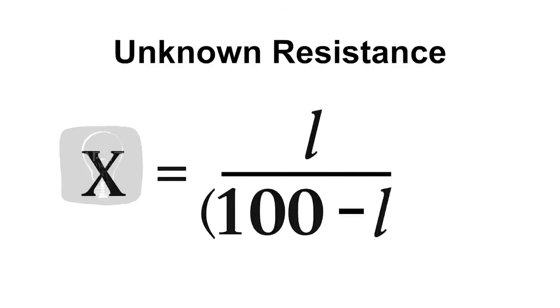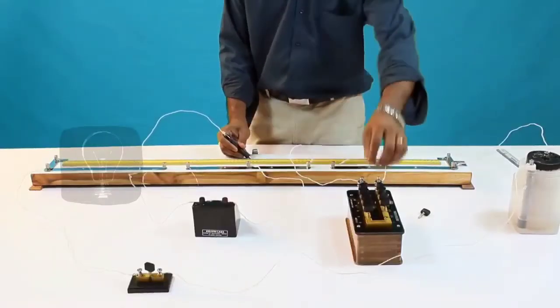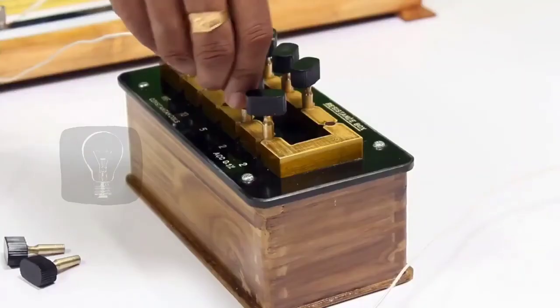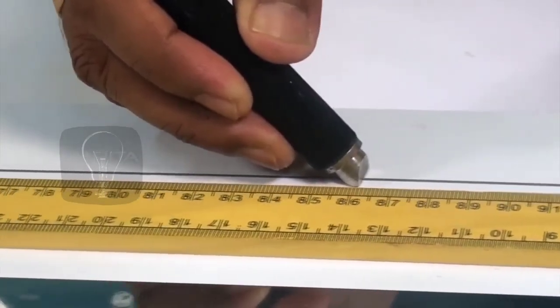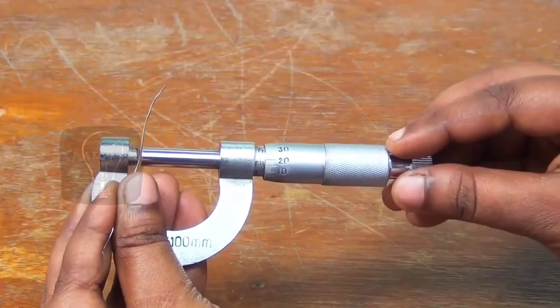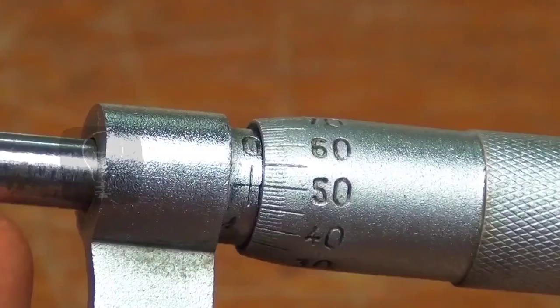Then calculate unknown resistance using the equation X equals L divided by 100 minus L into R. Repeat the experiment for different values of R and mean value of the resistance X gives the resistance of the wire. Measure the radius r of the wire using a screw gauge.